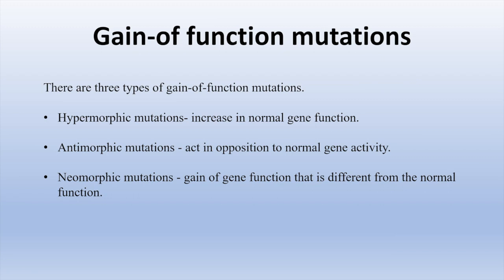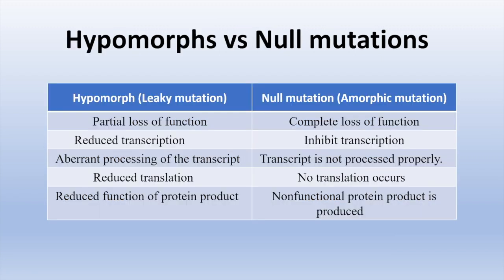More rarely, a mutant allele may have a gain of function, producing either more of the protein, or producing an active protein with a new and different function, or having an activity that is dominant and opposite to the wild type function — known as antimorphs, or dominant negative mutations.